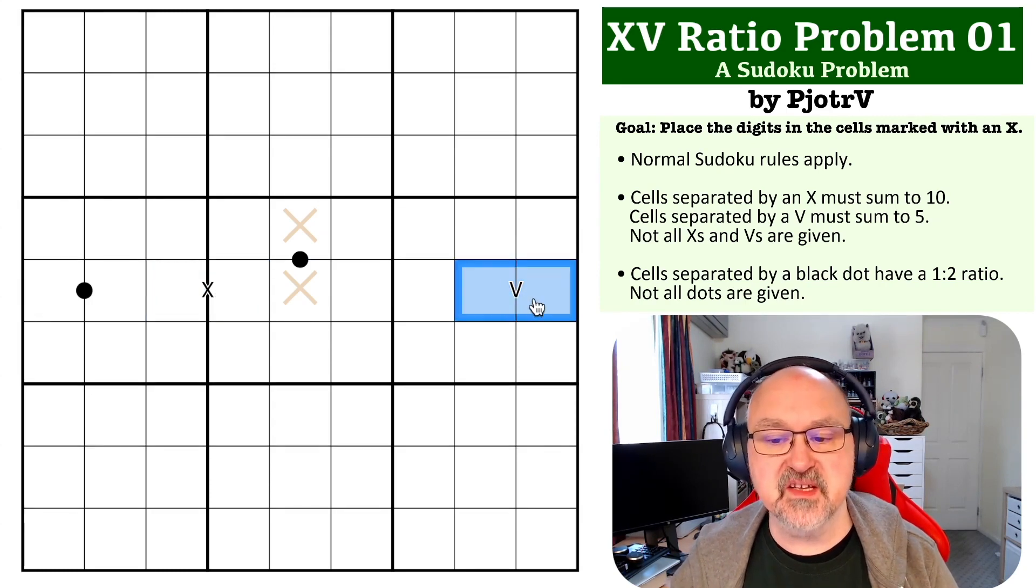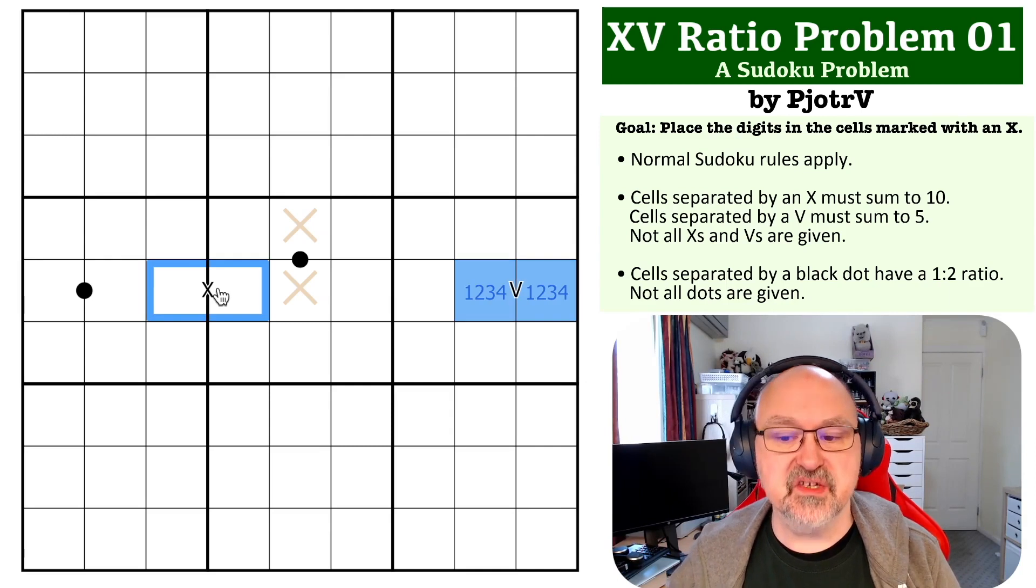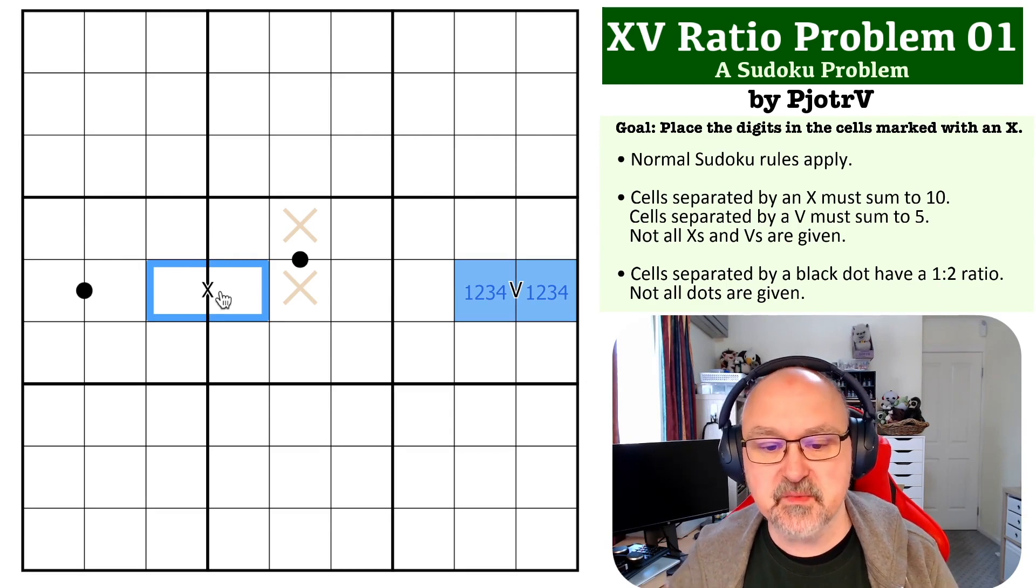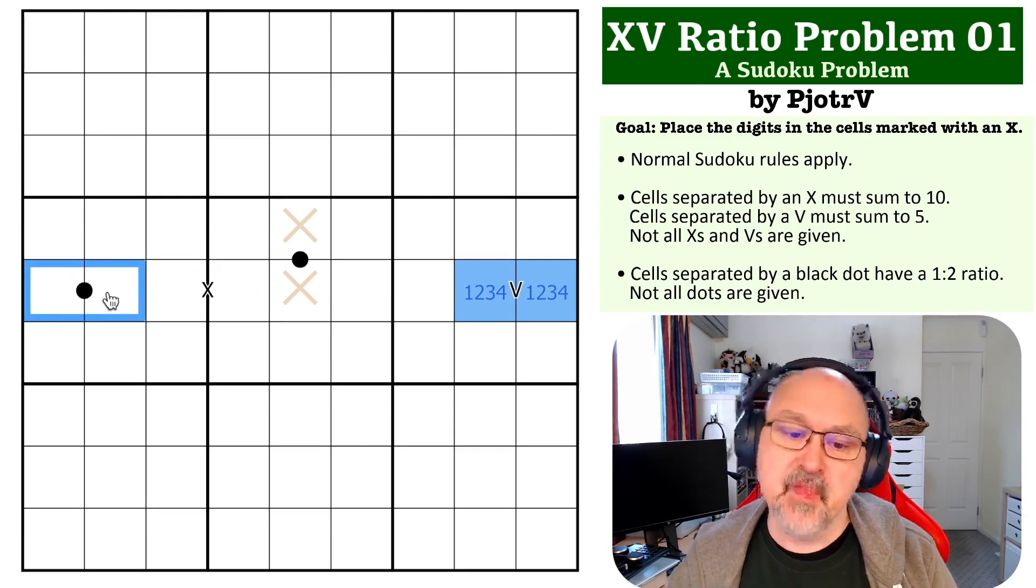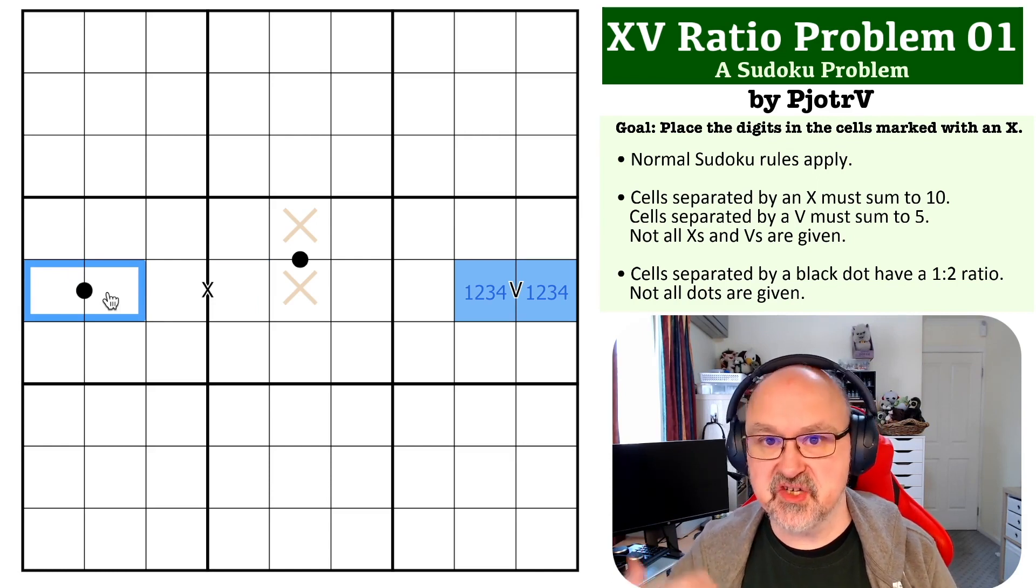On an X you must put one low digit, and by low digits I mean one to four. So you can only make this up with one-four or two-three. On an X it's either one-nine, two-eight, three-seven, or four-six. And on a black dot, there is no combination where you do not use at least one low digit.